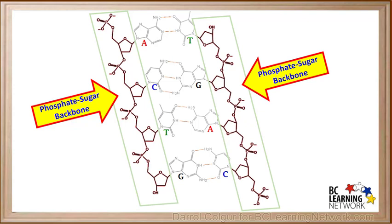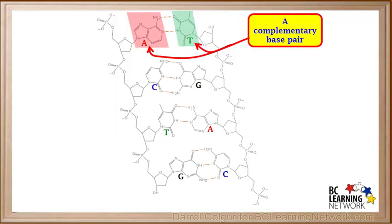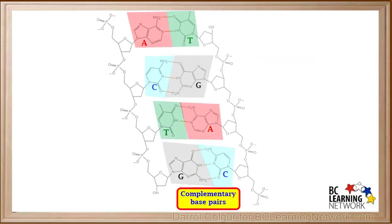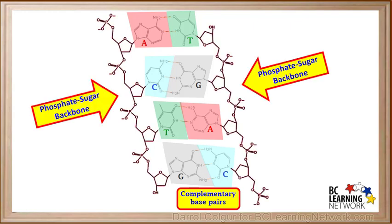If the molecule is compared to a ladder, the phosphate-sugar backbones would be the vertical rails of the ladder. In the center of the molecule are the complementary base pairs — here's adenine and thymine, and here's cytosine and guanine. The base pairs form the rungs of the ladder. This particular model has 4 base pairs; however, real DNA molecules are very much longer. It has been determined that all of the DNA in the 23 chromosomes of the human gamete contain about 3.2 billion base pairs, and all of these are either AT or CG.